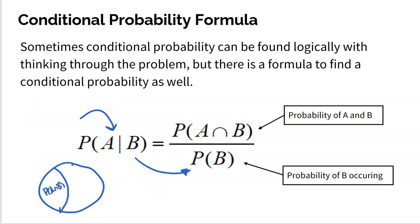To find the probability of A on the condition of B, you take your condition and that goes in the denominator — that's the probability of B. Your condition always goes in the denominator. And then on top goes both A and B. Sometimes you can figure out conditional probabilities logically without this formula, but the formula really does work if you're ever in a pinch. Let's take a look at a couple of examples of how we could use this formula and our logical reasoning to get a conditional probability answered correctly.